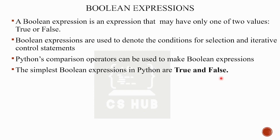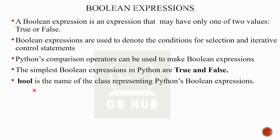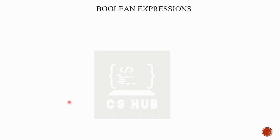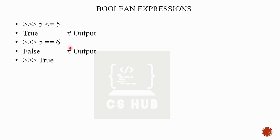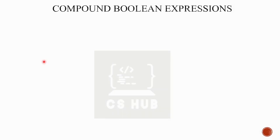The simplest boolean expression is just the boolean values True and False themselves. The class representing Python's boolean type is called 'bool'. You can check with type(True) or type(False) — it shows the boolean class. For example: 5 <= 5 is True; 5 == 6 is False. Just writing True outputs True, and False outputs False. That is a boolean expression.